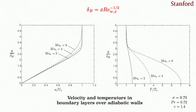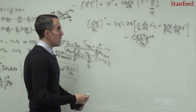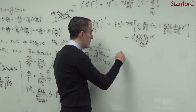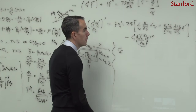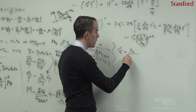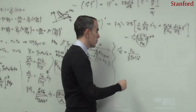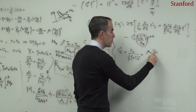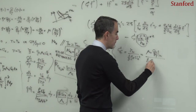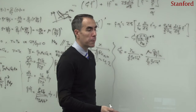One could also look at other quantities, such as skin friction and Stanton number. The skin friction coefficient Cf is the wall shear stress tau_w divided by one-half rho_e*u_e^2. Using the transformation rule: Cf = mu_w * (d_eta/dy)|_w * (du/d_eta)|_w, divided by one-half rho_e*u_e^2.